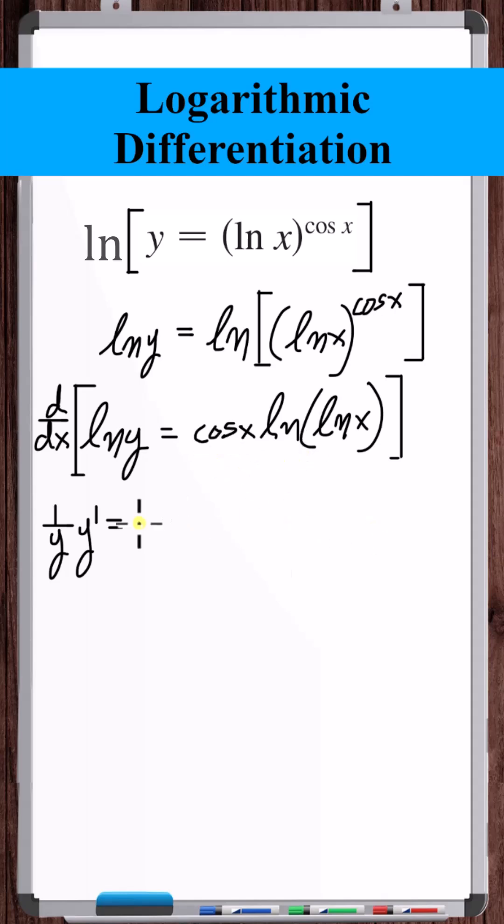Here we need to use the product rule. The derivative of the first times the second plus the derivative of the second, so derivative of natural log of natural log of x, chain rule.